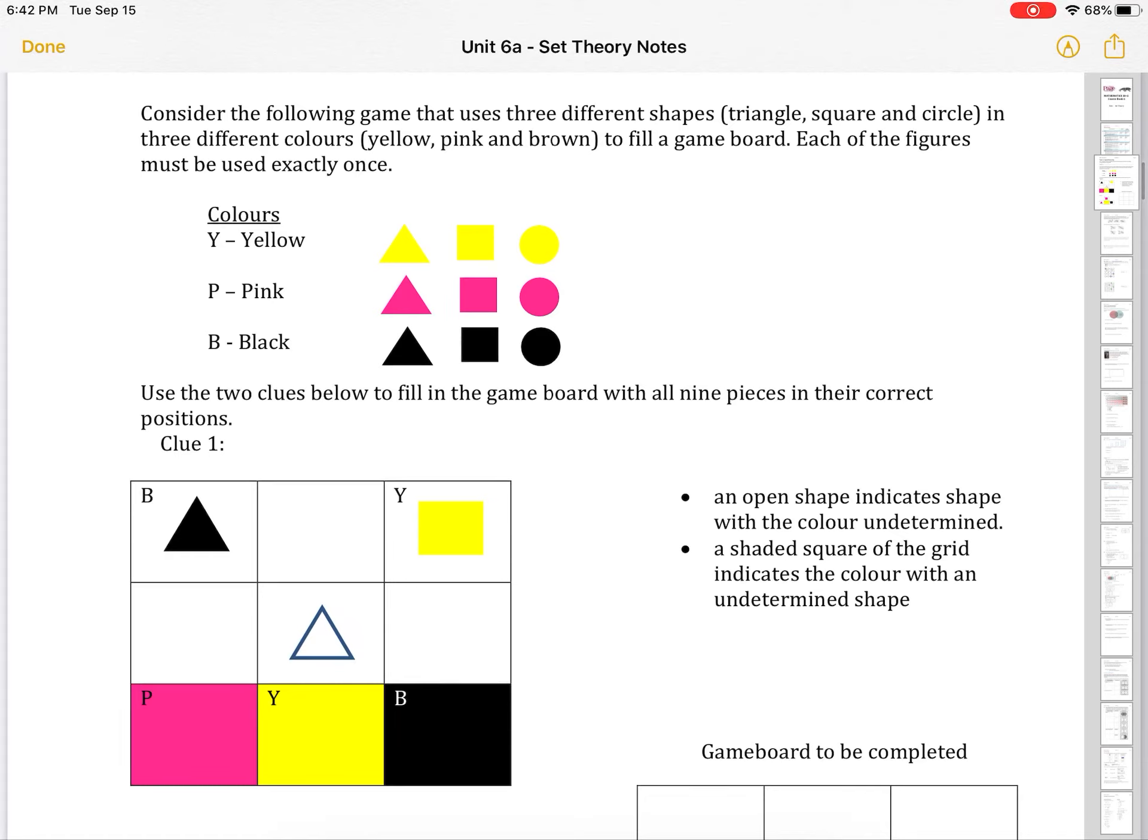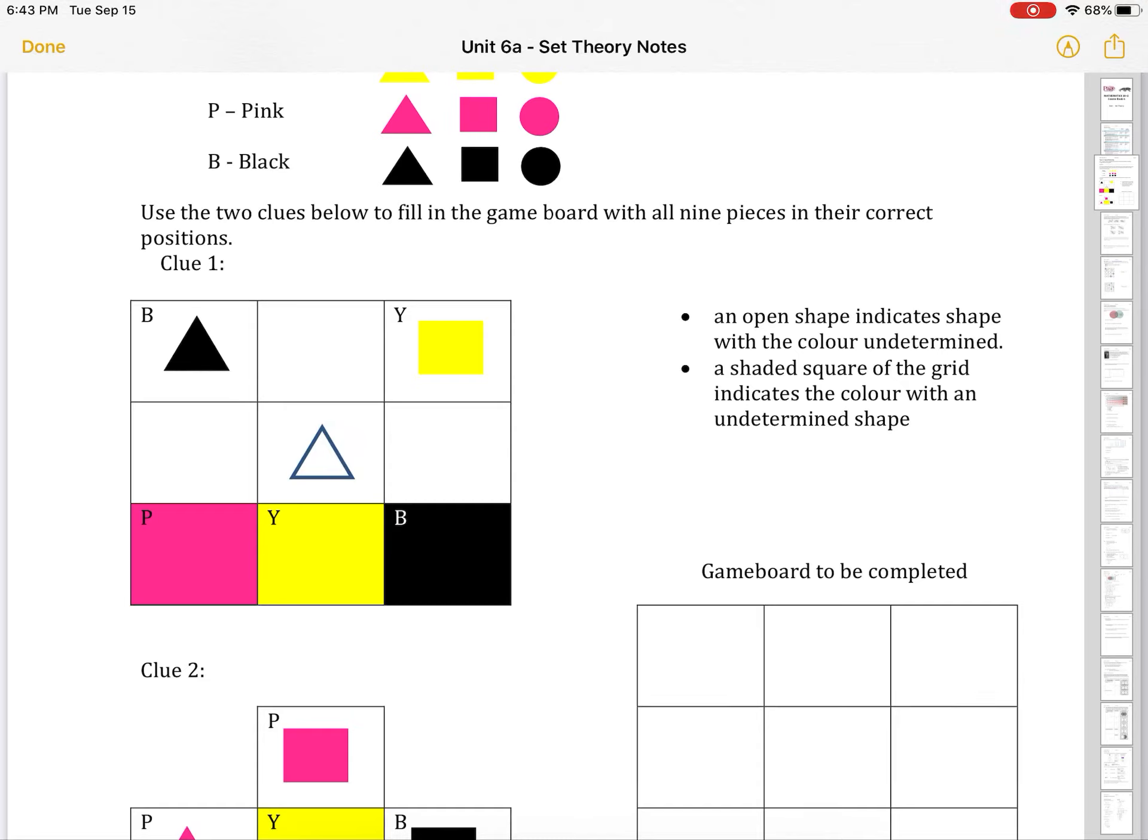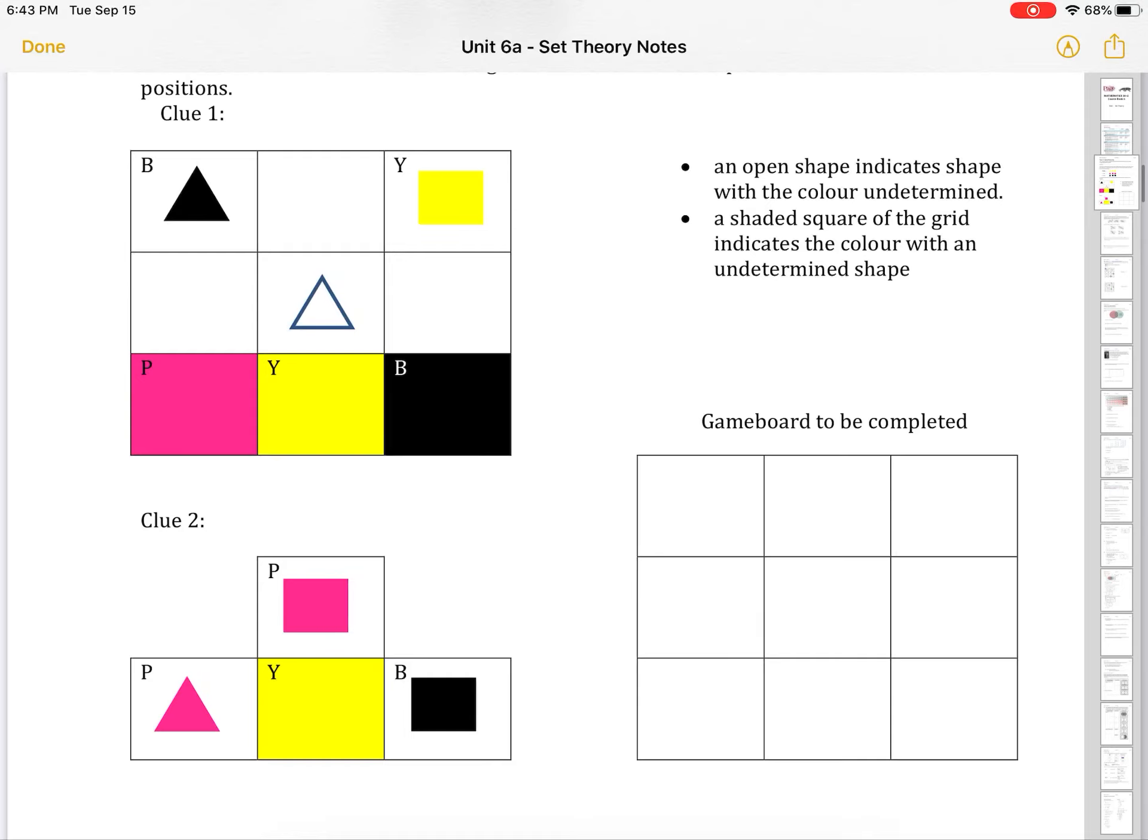Consider the following game that uses three different shapes - triangle, square, and circle - in three different colors: yellow, pink, and black to fill a board game. Each of the figures must be used exactly once. So we're supposed to use the clues below to fill in the game board with all nine pieces in their correct position. Clue number one: an open shape indicates the shape with the color undetermined. A shaded square of the grid indicates the color with an undetermined shape. We have to complete the game board.